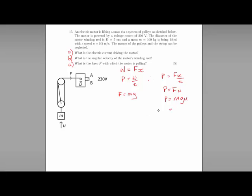So power equals mg, where m is 100, g we always assume to be 10 in physics exams, and the speed is 0.5. So that gives us a power of 500 watts.